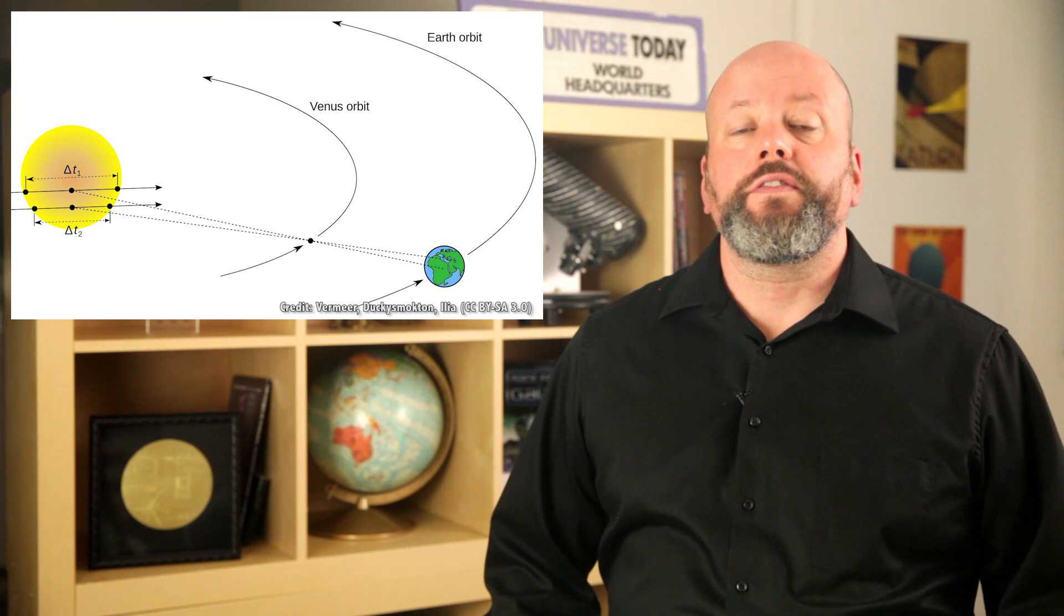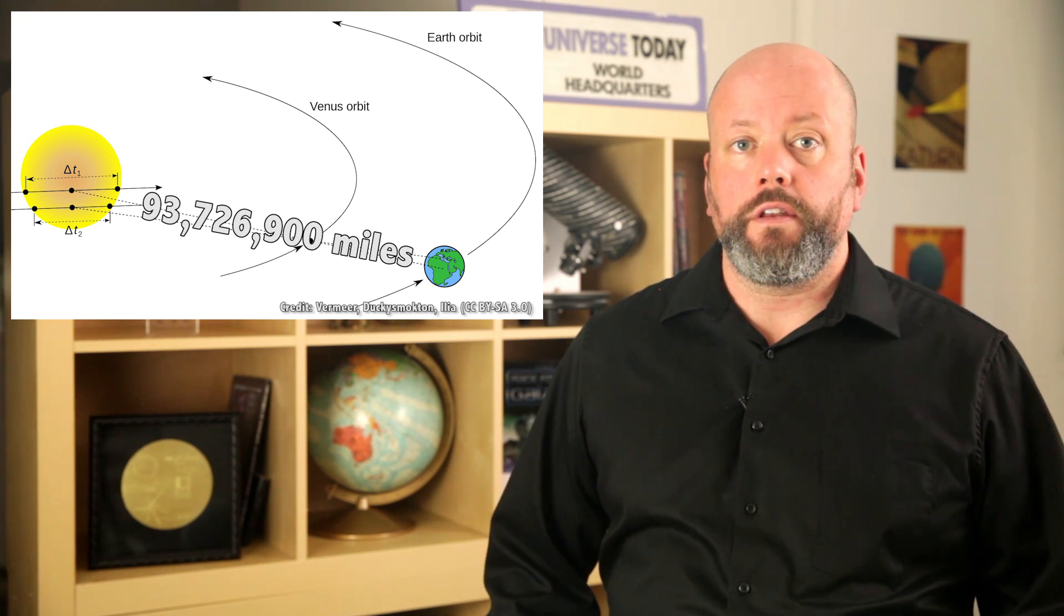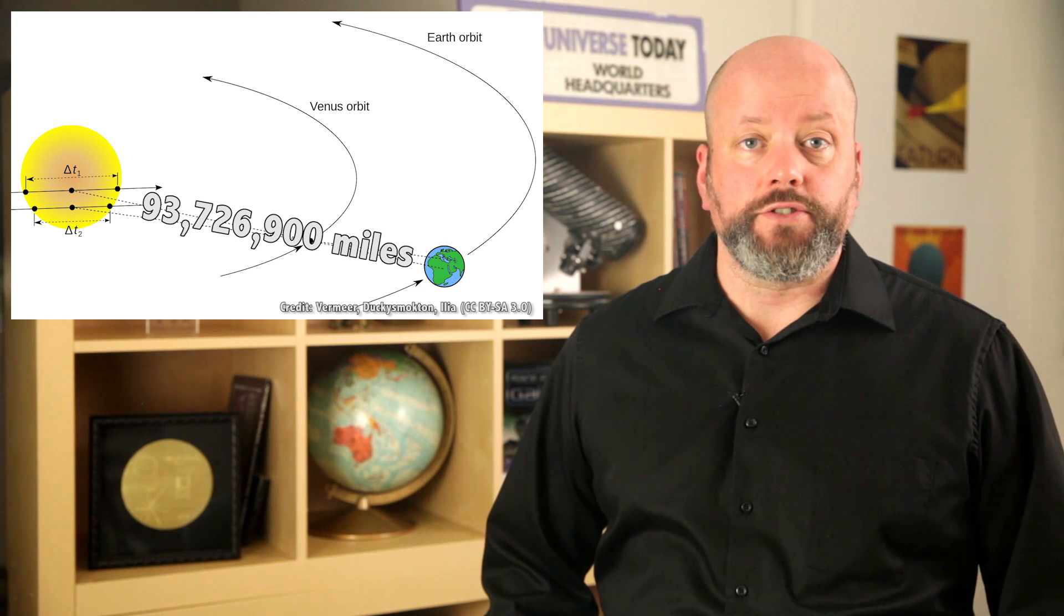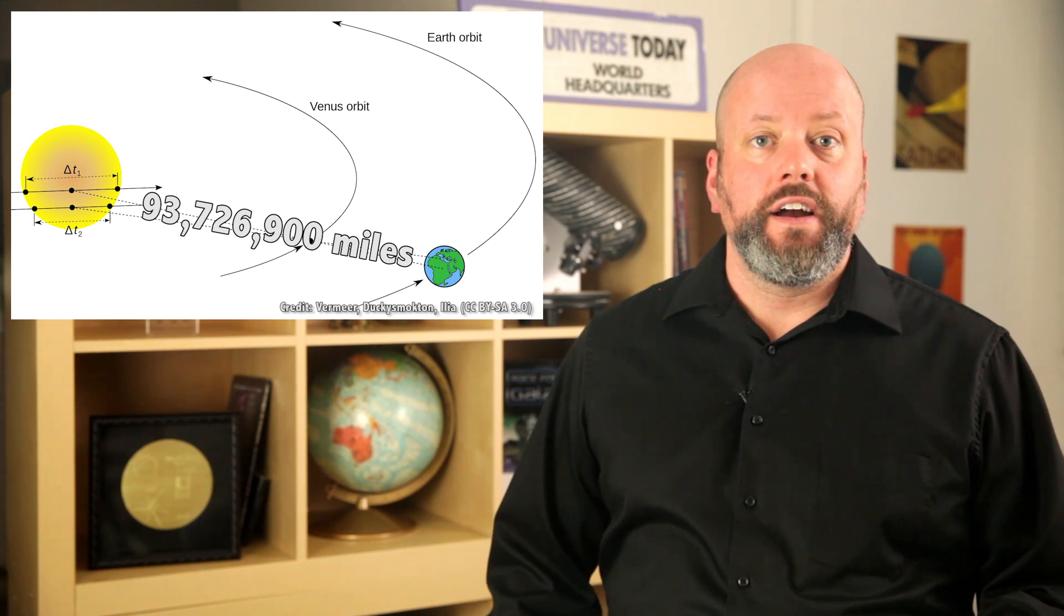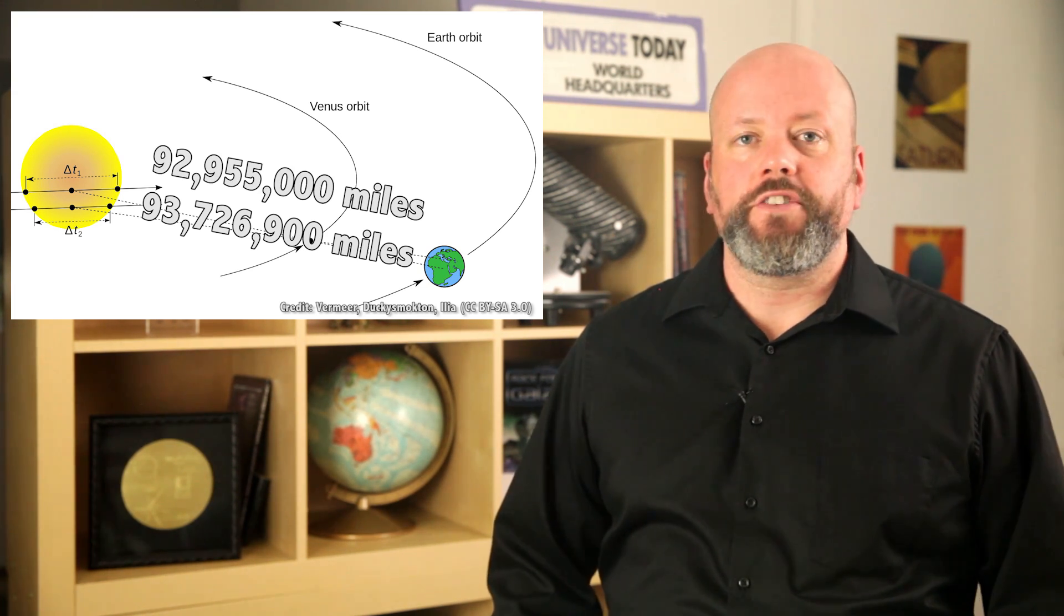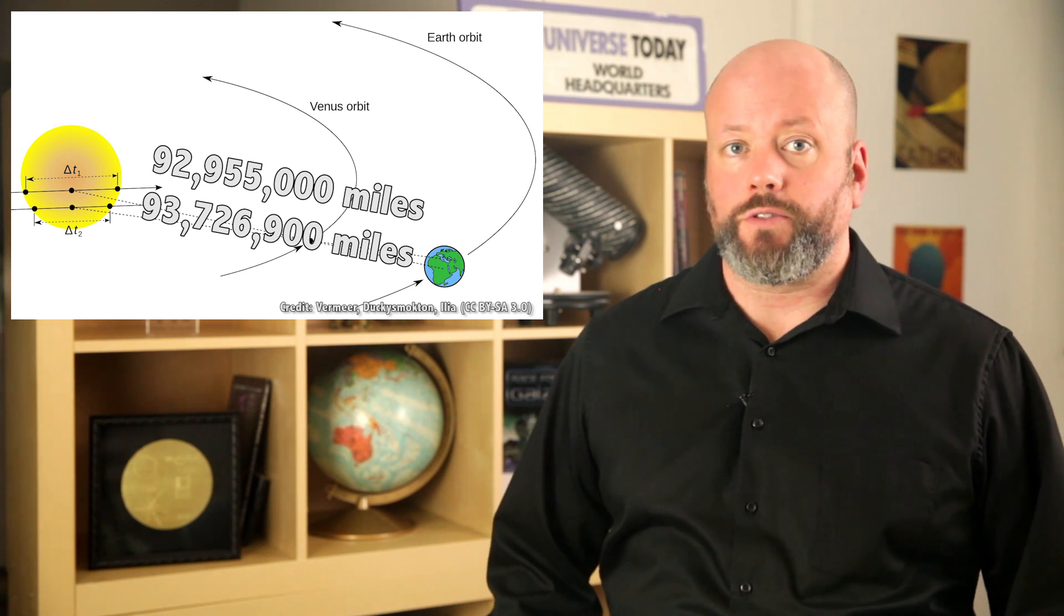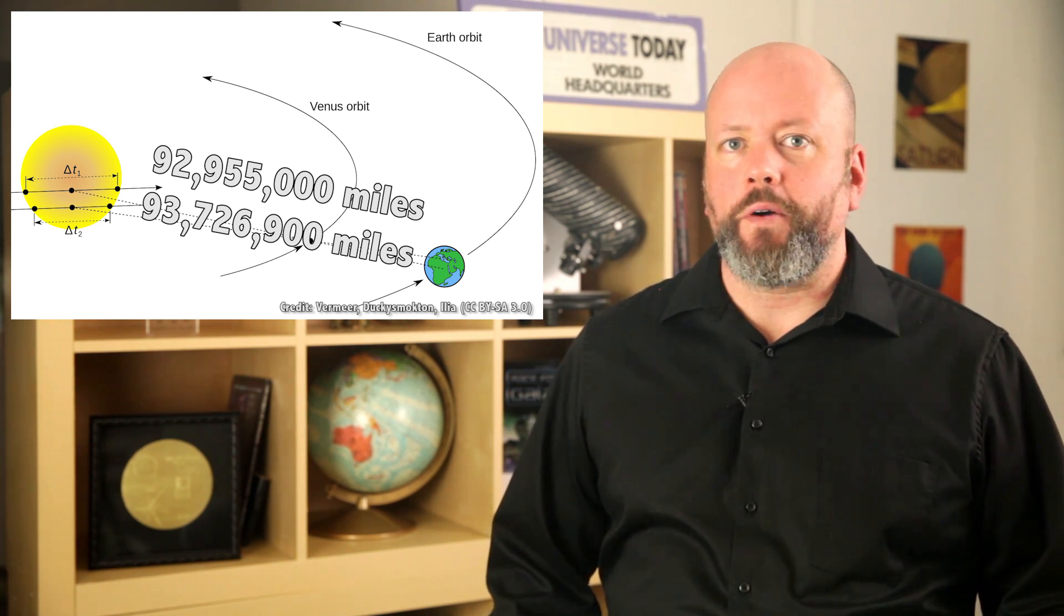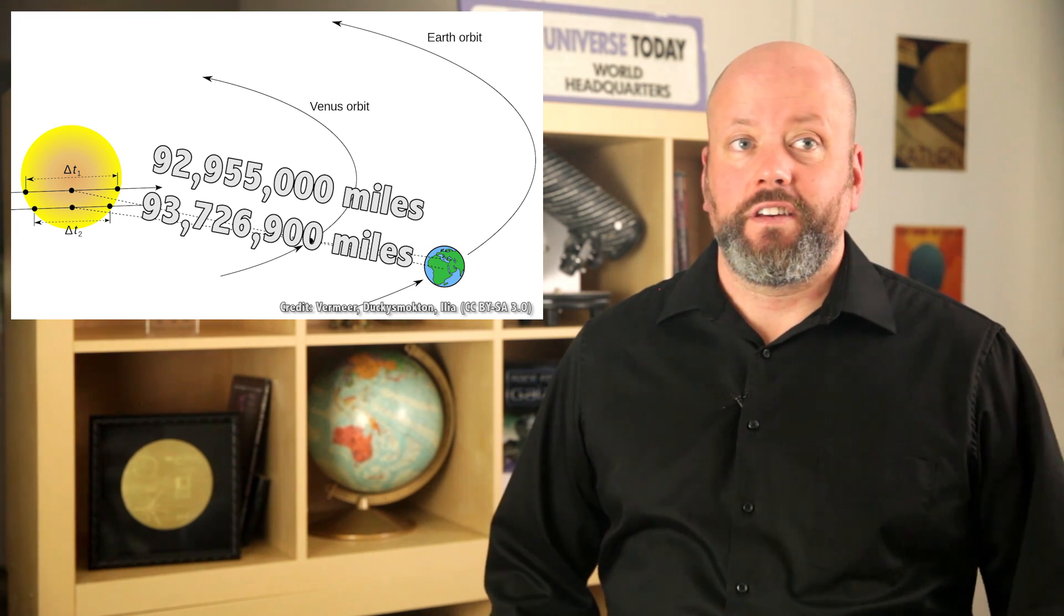By combining all these measurements across the Earth, astronomers calculated that the distance from the Earth to the Sun was 93,726,900 English miles. The most accurate number that we have today is 92,955,000 miles, or about 150 million kilometers. So, they were only off by about 1%. Not bad.